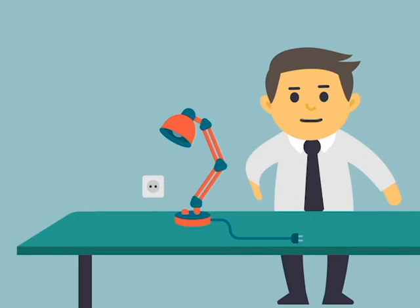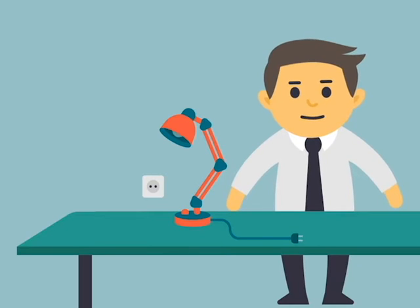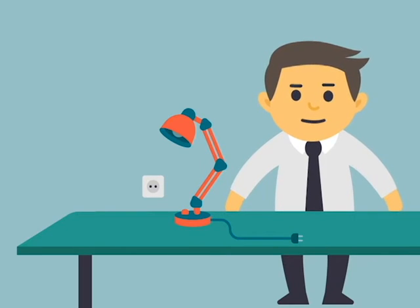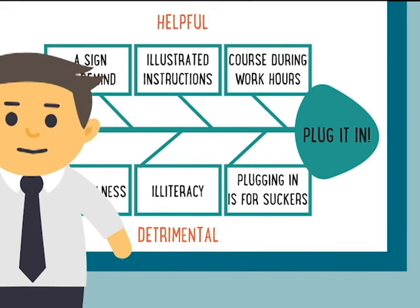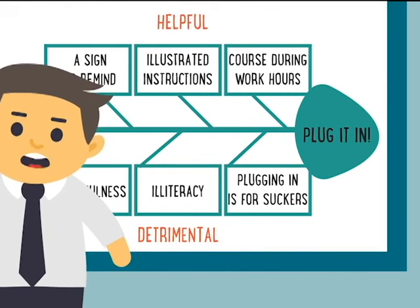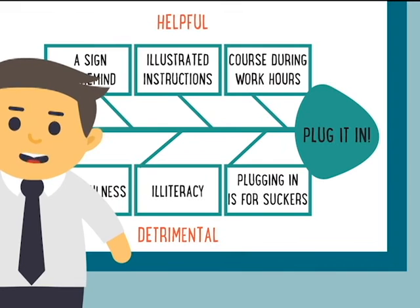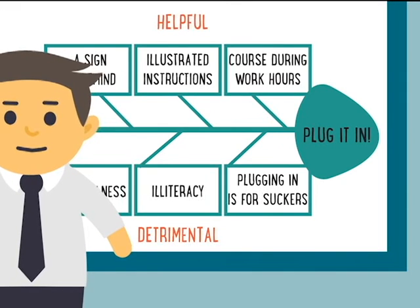The diagram can also be used for achieving specific goals, not only for problem solving. For example, how can we make it so that people won't forget to plug in their lamps? We fill out the diagram so that at the top are all the factors which help further a goal, and at the bottom, those that get in the way.